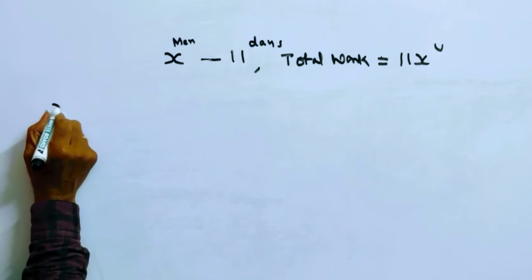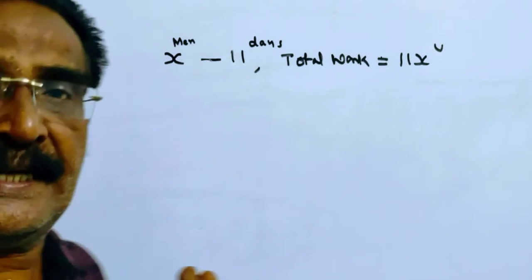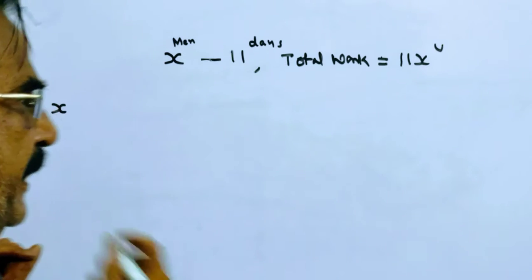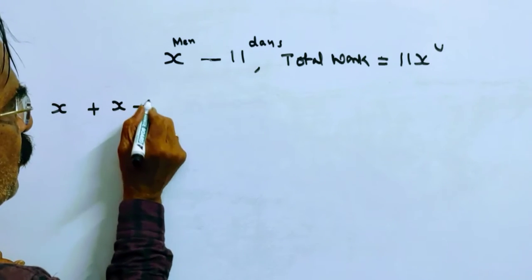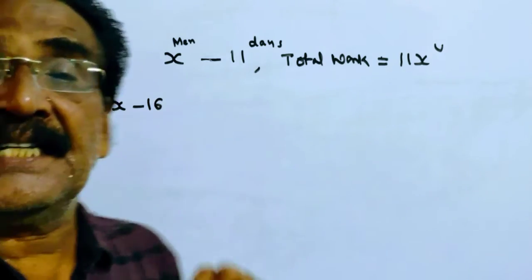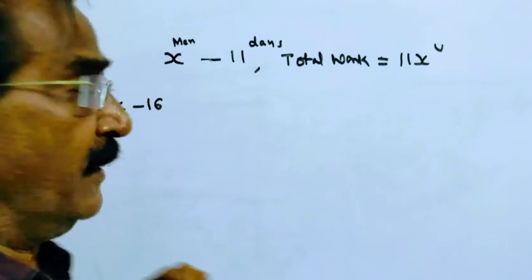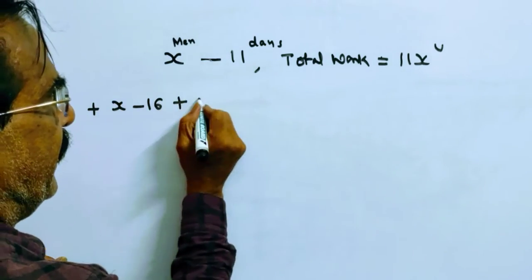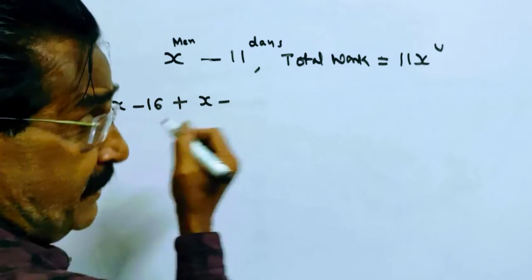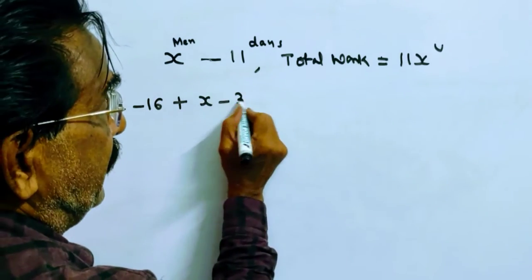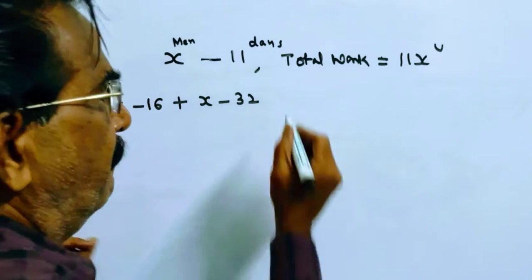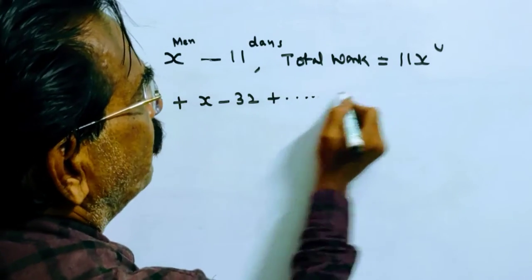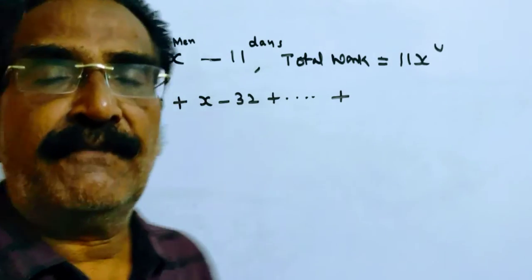See friends, first day X men can do X units of work per day. Second day 16 men left, so second day X minus 16 units of work will be done. And third day, again 16 men left, so third day X minus 32 units of work will be completed. And so on, on 15th day.